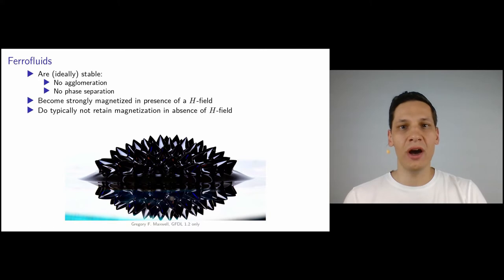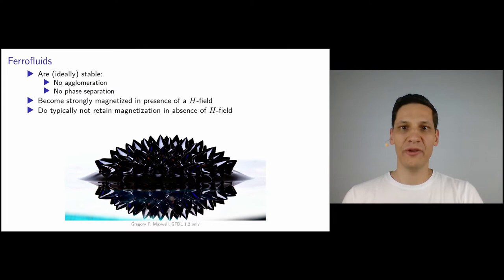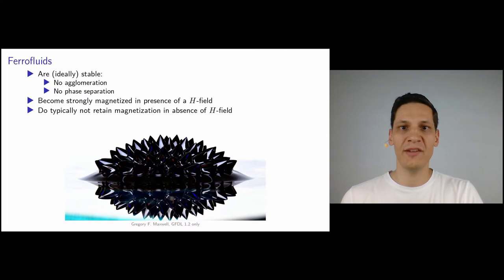A key feature of ferrofluids is that they become strongly magnetized in an external magnetic field. However, once the magnetic field is removed, the magnetization is typically not retained. If the field strength is large enough, it can look similar to the ferrofluid depicted in the picture on the bottom of this slide with this very spiky surface. The reason for the formation of these spikes lies in a complex counterplay of different forces acting on the ferrofluid.